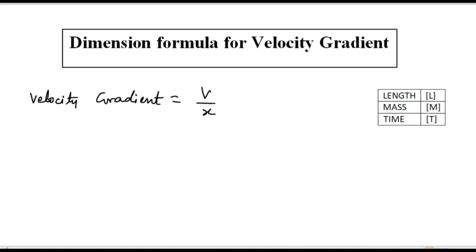Velocity gradient is normally used to show how velocity changes at different points over a length. It may be v1, v2, v3 over a length x.